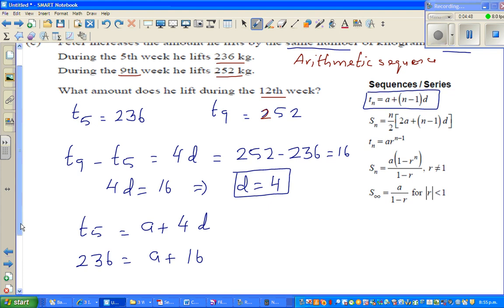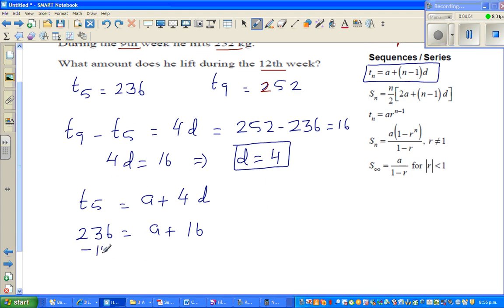So if you take away 16 from both sides, so if you take away 16 from this side, you have to take away 16 from this side. So this on this gets cancelled. So 220 is equal to a. So your first term, or t1, is 220. So let me rewrite: so a is 220 and d is 4.